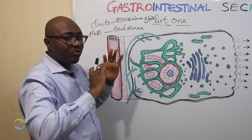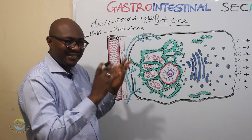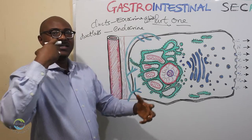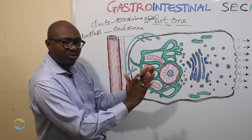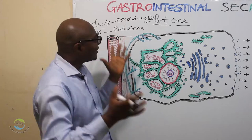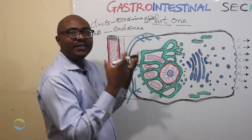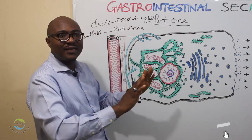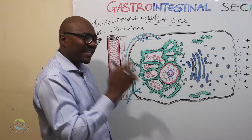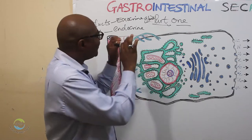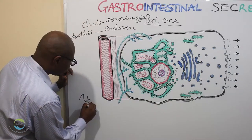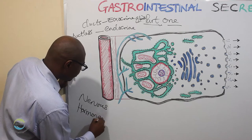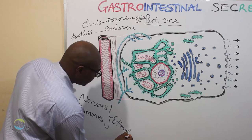Something you also need to know about GIT secretion is the mechanism of stimulation. Effectors — the things that implement physiological processes — are muscles and glands, especially smooth muscles. The glands are stimulated either through chemical means or electrical means. They can be stimulated through nervous stimulation and also hormones, which is the chemical part of stimulation.